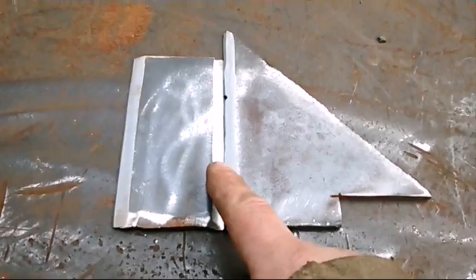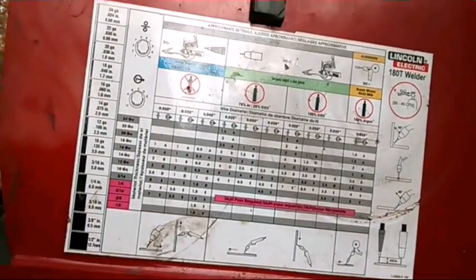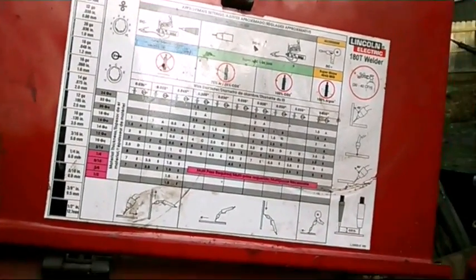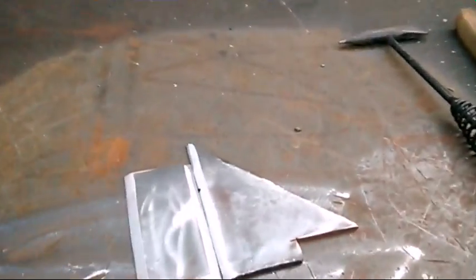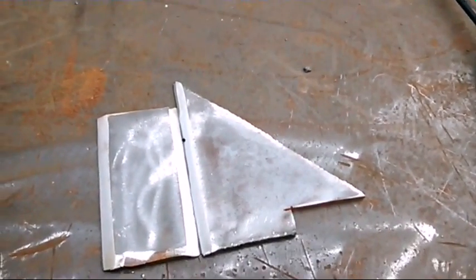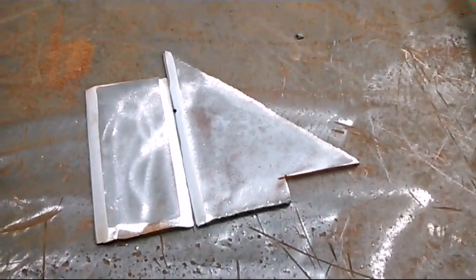So we'll do this one first. And on this stuff, I go with the recommended machine settings. On solid wire, I usually don't. I kind of tweak it around a little bit. But I know settings jump a lot for self-shielded flux core between different size metals. I don't know why it jumps so much, but it does. So I'm going to run that one first.